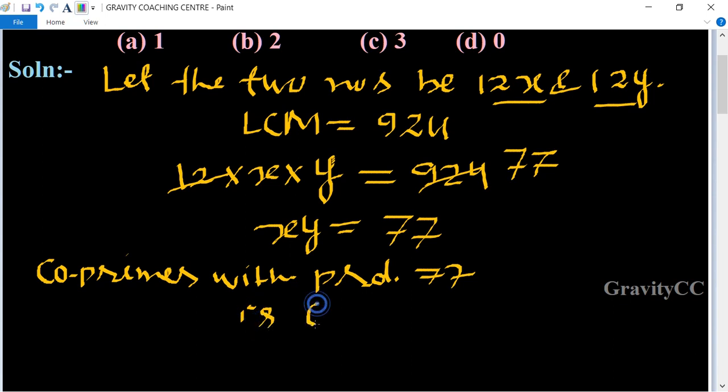So one of the co-prime pair is 77 comma 1, and another one is 7 comma 11.